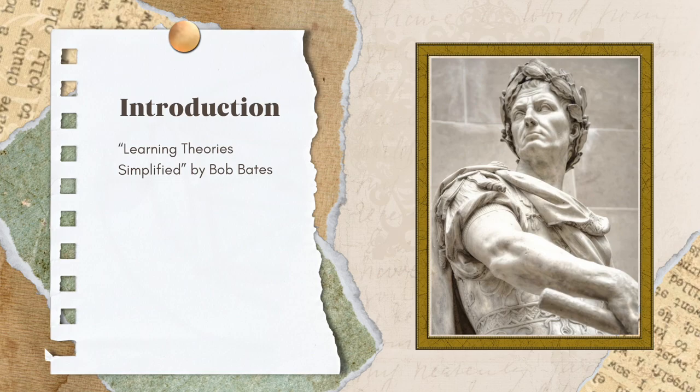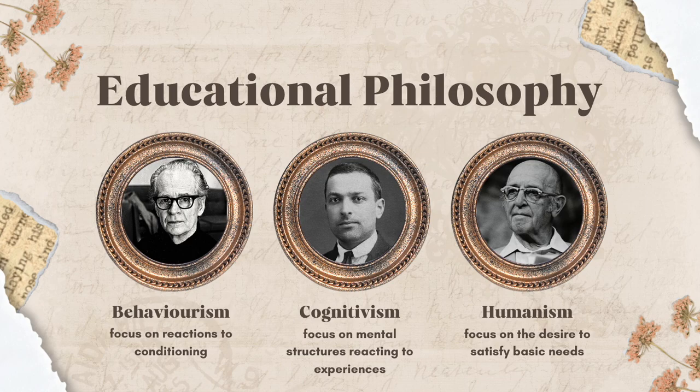In part one of Learning Theories Simplified, author Bob Bates discusses classical learning theories such as behaviorism, cognitive psychology, and constructivism. Behaviorism focuses on reactions to conditioning, cognitivism focuses on mental structures reacting to experiences, and humanism focuses on the desire to satisfy basic needs, as we look at the three main educational philosophies today.